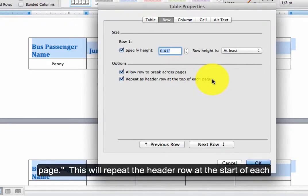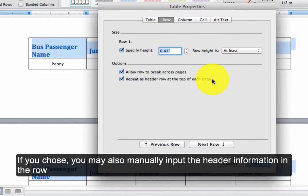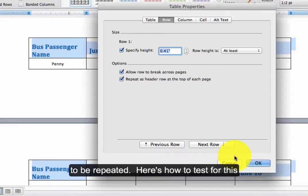This will repeat the header row at the start of each new page automatically without manual input. If you choose, you may also manually input the header information in the row to be repeated.